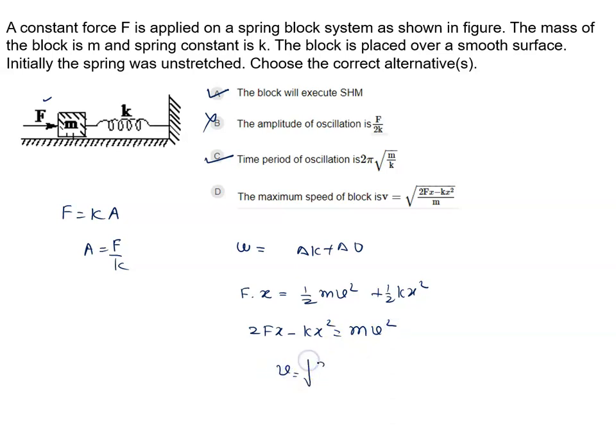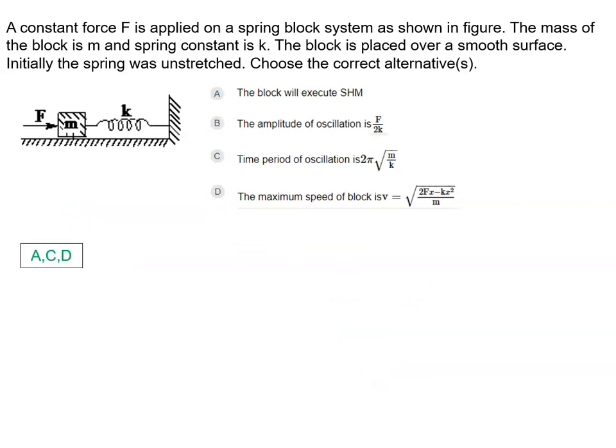V equal to root 2Fx minus Kx square upon M. So option D is also correct answer. So right answer of this problem will be option A, C and D.